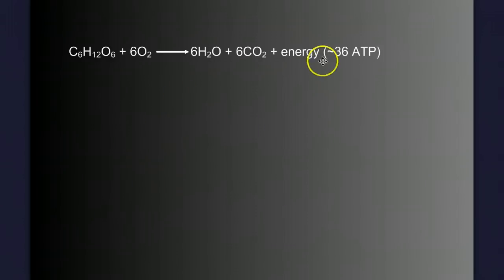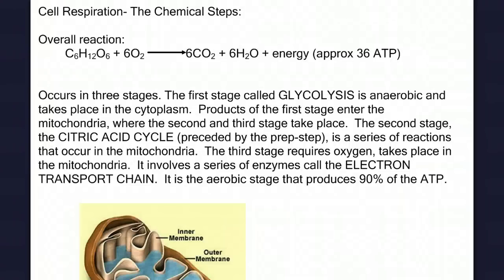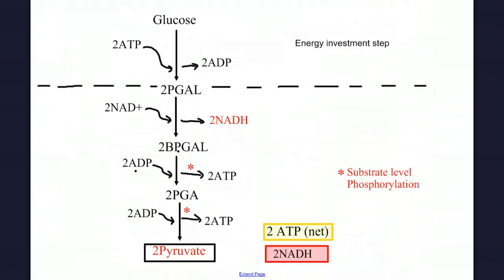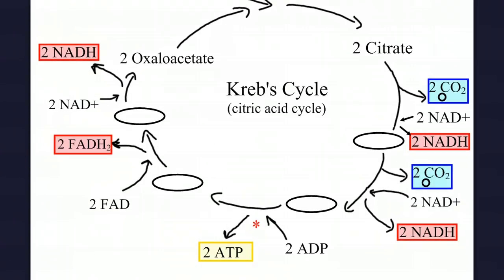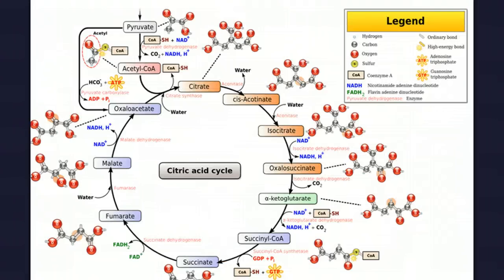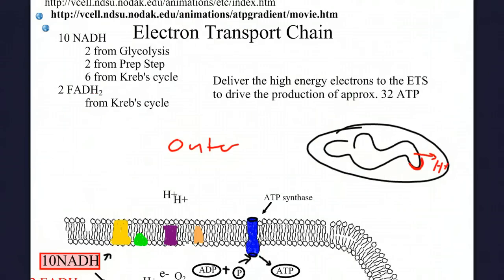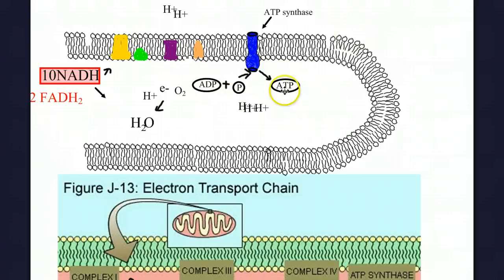But what about a more complicated reaction, like this one, which you may recognize as aerobic respiration? If we look at this reaction, we may be deceived into thinking that glucose reacts with oxygen to make water and carbon dioxide while releasing energy in the production of ATP. However, you may recall that's not really what happens. In fact, this is not one simple chemical reaction, but a complex series of reactions.